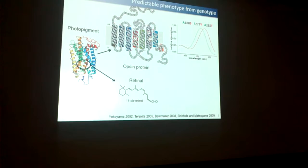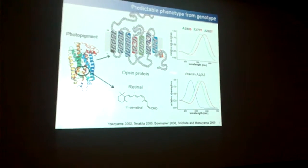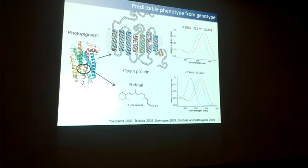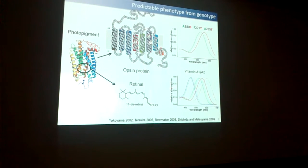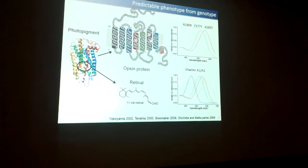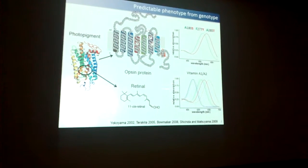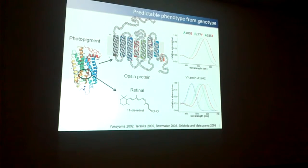The peak of sensitivity can also change in other ways. For example, you can change the A1 to A2 vitamins, and this results in a shift of all your visual pigments — for example, a red shift, or a shift to longer wavelengths, when you go from A1 in the solid line to A2 in the dashed line.